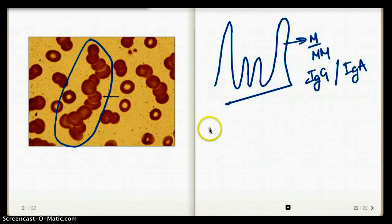Multiple myeloma is a monoclonal gammopathy. One clone is made in lots of great amounts. So we're going to see either IgG or IgA.